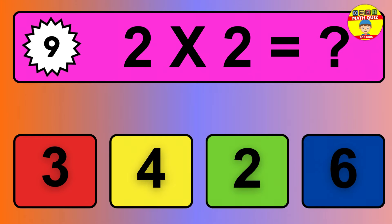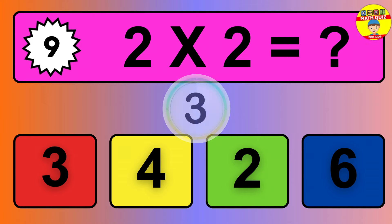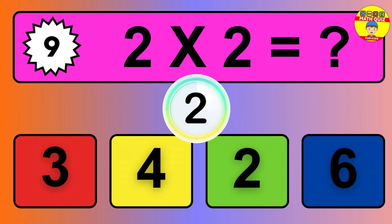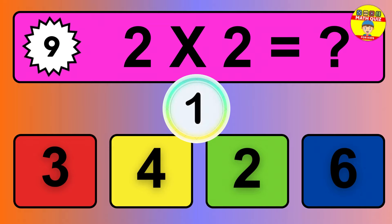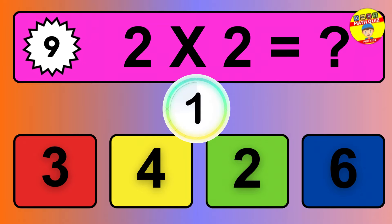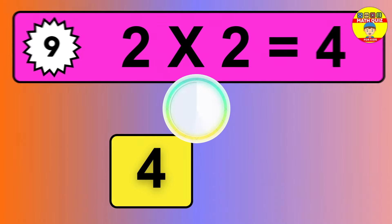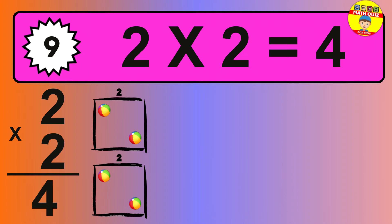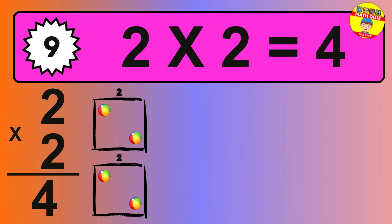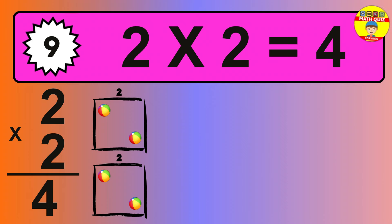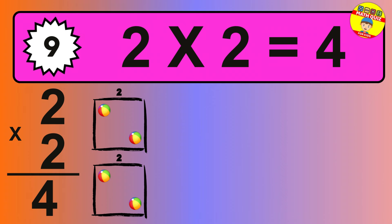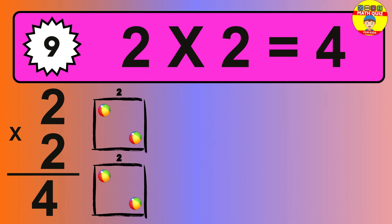Question 9. 2 times 2 equals what? The answer is 2 times 2 is 4. To calculate, we have 2 groups with 2 balls each one. So how many balls do we have? 4 balls.